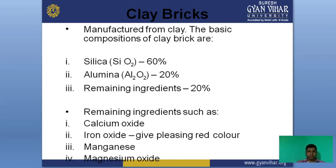Bricks can be made from: silica at 60%, alumina at 20%, and the remaining ingredients include calcium oxide, iron oxide — which gives the red color — and magnesium oxide. These are all the compositions used in manufacturing of bricks.